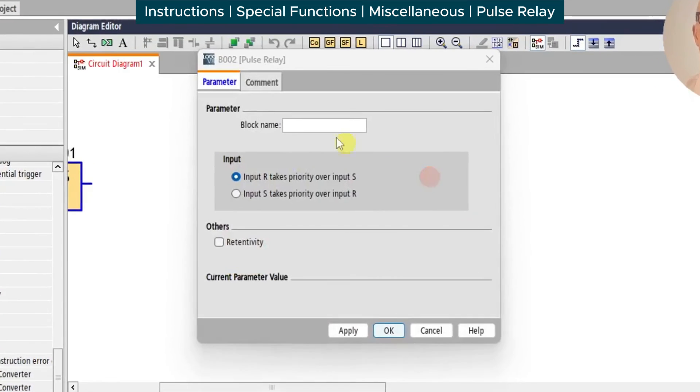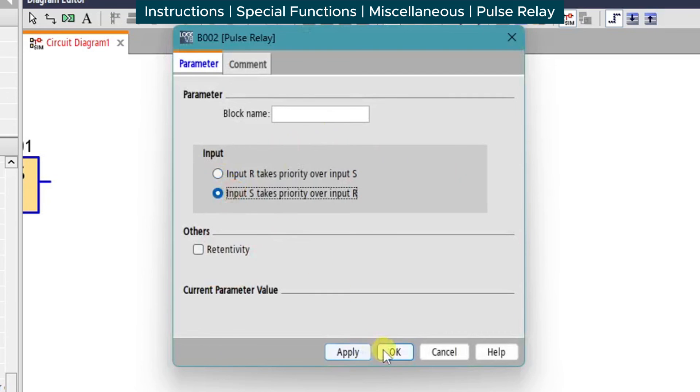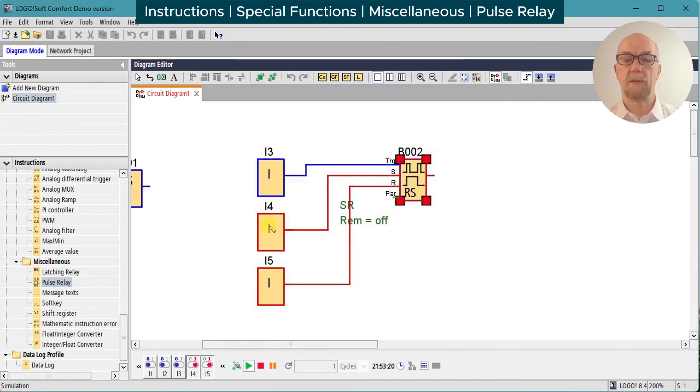We can invert that so that the set priority takes precedence. And now we can see with set and reset both enabled, the output is set. Toggle again and the trigger input works as normal.